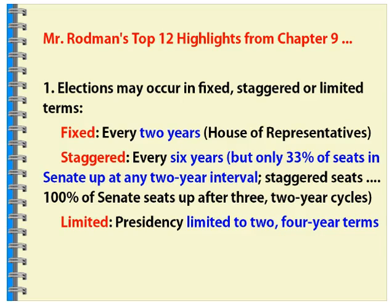Let's start off by talking about how elections actually happen. They can be either fixed, staggered, or limited. A fixed election is every two years — the House of Representatives sits for a fixed election. That means every two years, every one of the 435 members of the House of Representatives is up for election or re-election if they're running again as an incumbent.